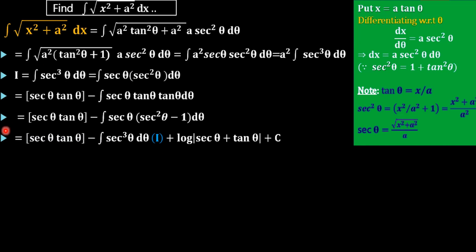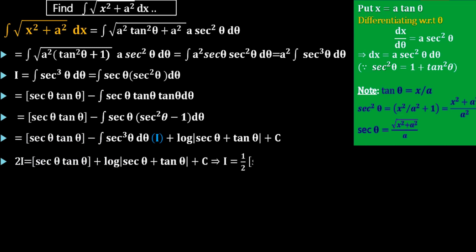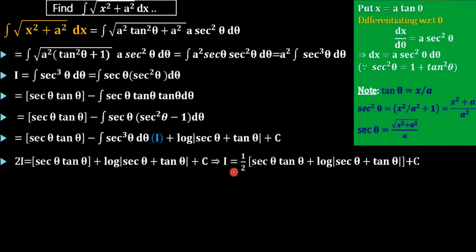We are taking this I to the left-hand side. Then we will get 2I equal to sec theta tan theta plus log|sec theta plus tan theta| plus C. Then what is I? It is half of this term, that is: I equals one half of [sec theta tan theta plus log|sec theta plus tan theta|] plus C.